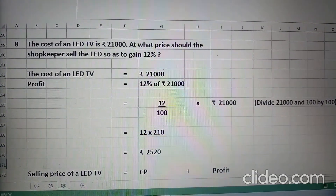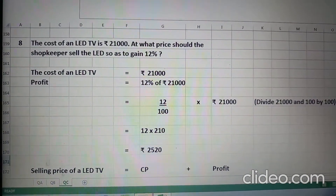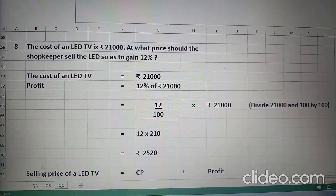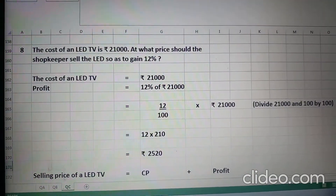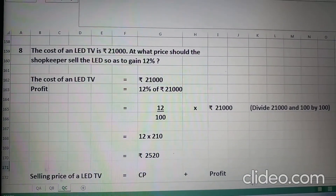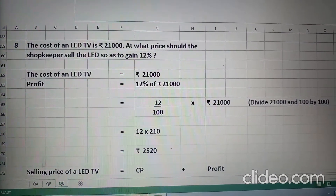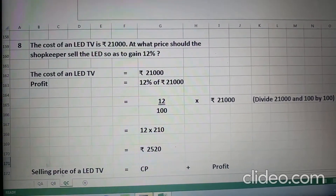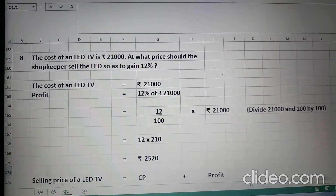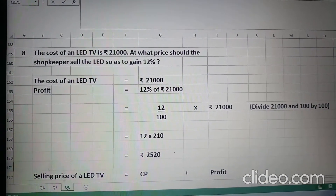Question 8 is: the cost of an LED TV is Rs. 21,000. At what price should the shopkeeper sell the LED so as to gain 12%? Now, cost of the LED TV is given as Rs. 21,000. Shopkeeper usko kaunsi price pe sell kare ki ushe 12% profit ho. The cost of an LED TV is Rs. 21,000. Profit is 12% of Rs. 21,000.